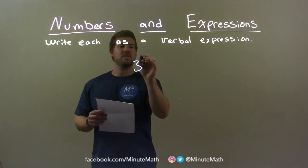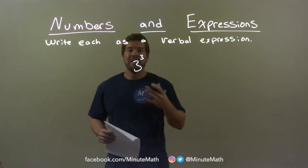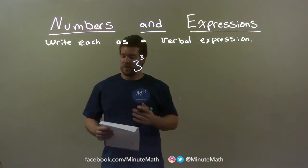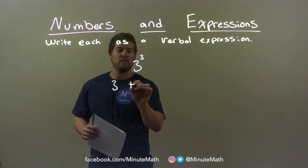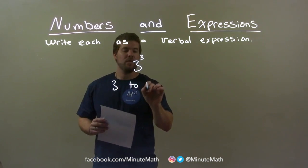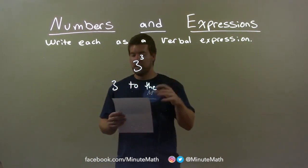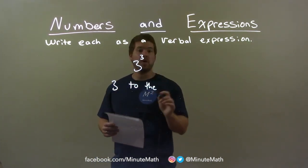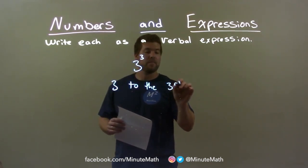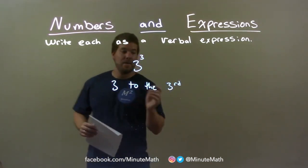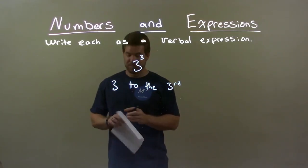3 to the 3rd power. Well, if I were to write this as a verbal expression, I would write it as 3 to the — because we get the exponent — 3 to the 3rd. And what power? The 3rd. So we can just write it as the 3rd. We just have 3 to the 3rd.